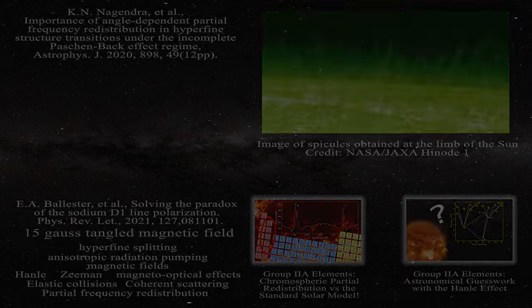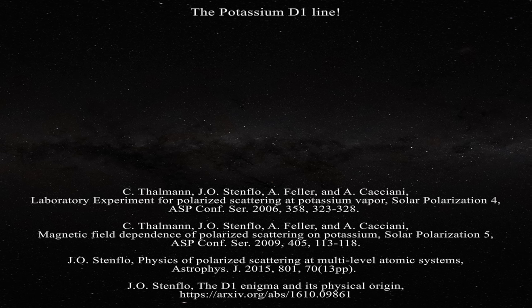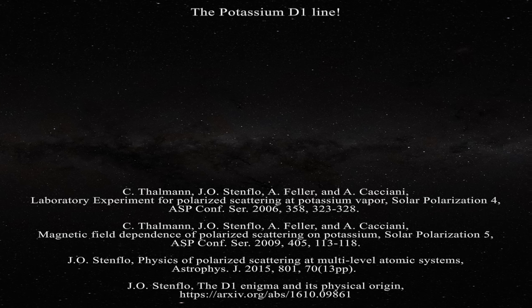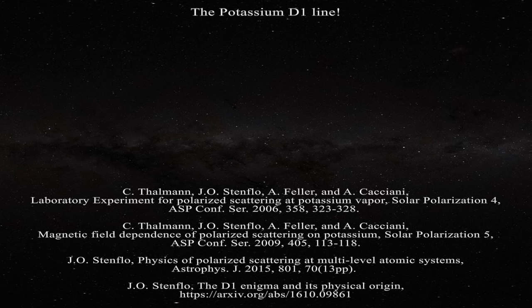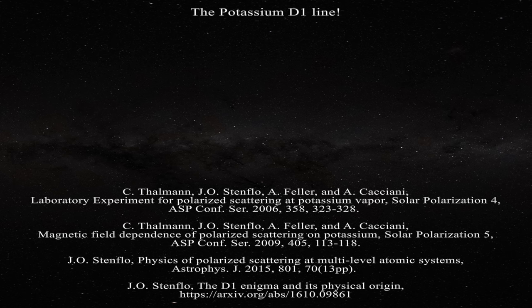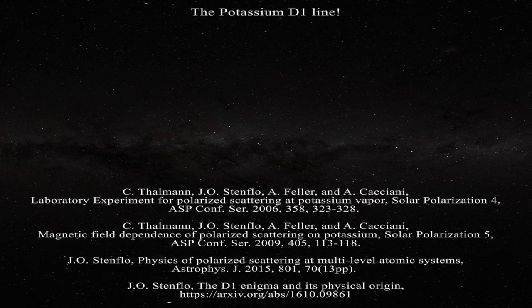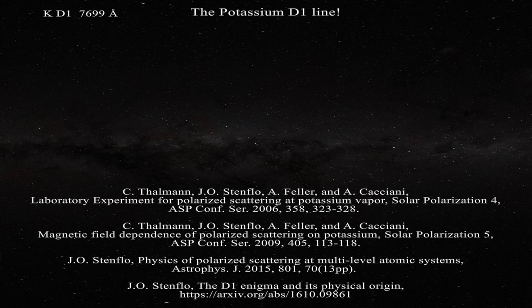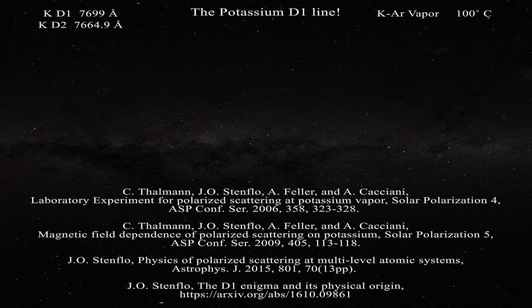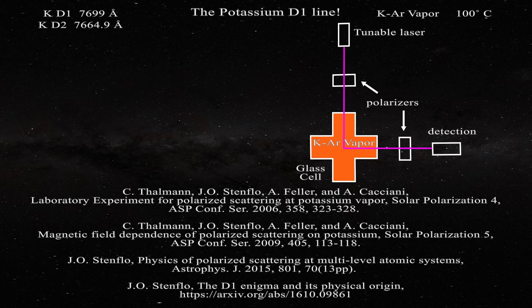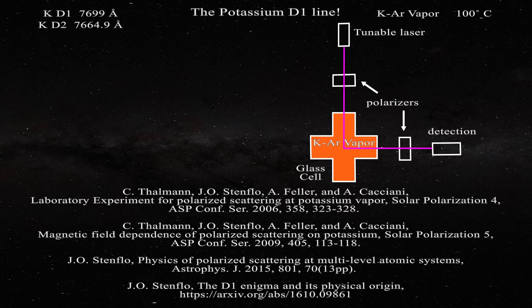In order to better understand the sodium D1 line, Stenflo in these four papers turned to the formation of the potassium D1 line in the laboratory. From a quantum mechanical perspective, experimental study of the potassium D1 line is a perfect analogy to directly studying the sodium D1 line, but with the important advantage that tuned lasers are readily available which can cause the needed transitions. In the first of these works, Professor Stenflo reminded his readers that the scattering phenomenon in the second solar spectrum is not caused by magnetic fields, although such fields can modify line shapes through the Hanley effect. In Stenflo's experiments, polarization is achieved on both the potassium D1 line at 7699 angstroms and the potassium D2 line at 7664.9 angstroms when irradiating a potassium argon vapor at 100 celsius held in a glass cell as seen in this figure.